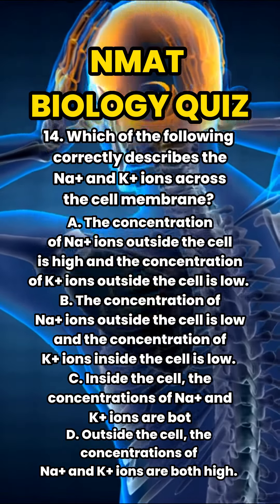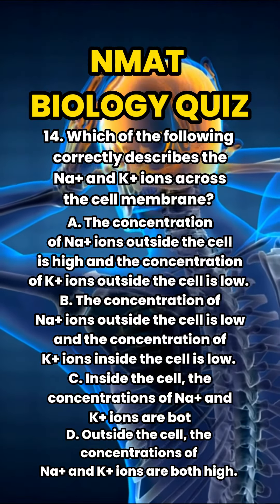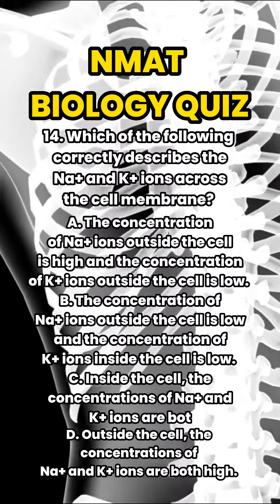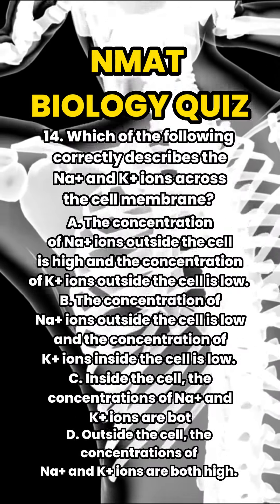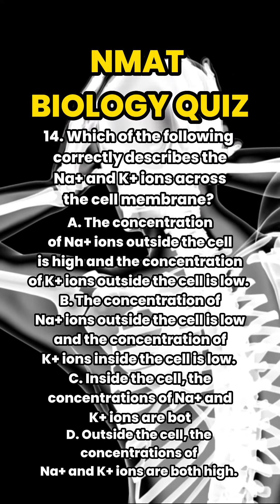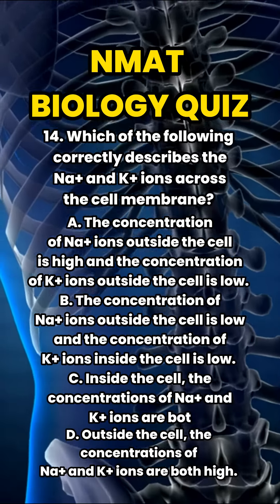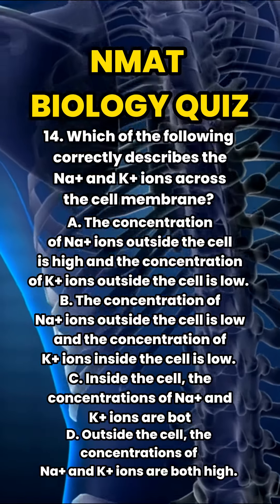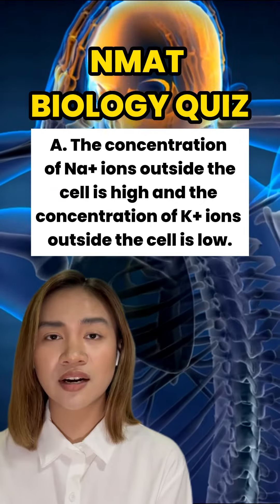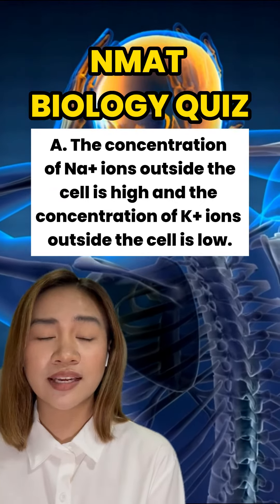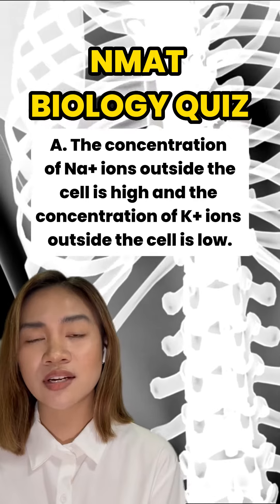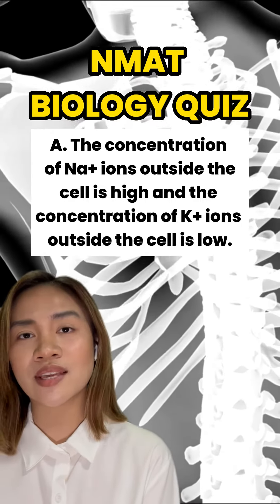Number 14. Which of the following correctly describes the presence of sodium and potassium ions across the membrane? Potassium ions are high in concentration inside the cell, and sodium ions are high in concentration outside the cell.